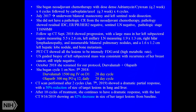PET-CT showed all lesions were intensely FDG-avid, indicating high metabolic activity consistent with cancer. Ultrasound-guided biopsy of the left subpectoral mass confirmed recurrence — still triple-negative. She screened for our protocol in October 2018 and began cycle one on November 5th, 2018. A CT scan after two cycles in January 2019 showed a dramatic partial response with 50 percent reduction in target lesions in the lung and liver. After 10 cycles she continues to have a dramatic response, with her September CT showing an 82 percent decrease in target lesion size from baseline.